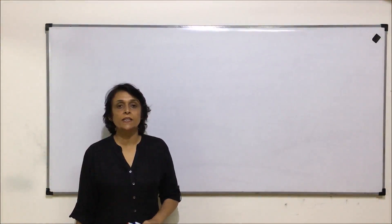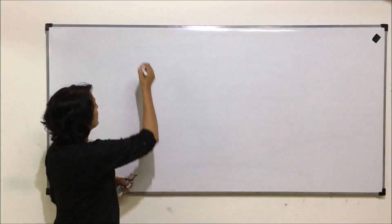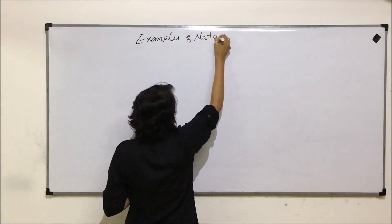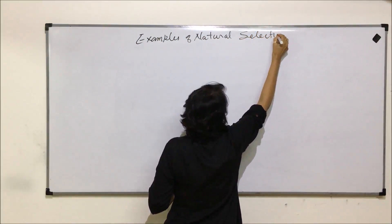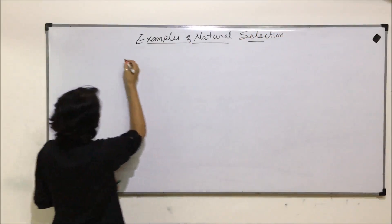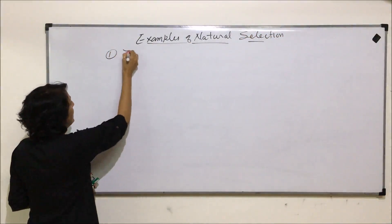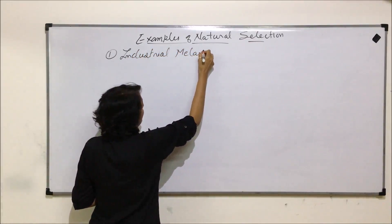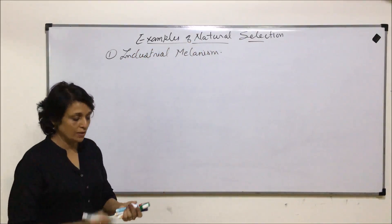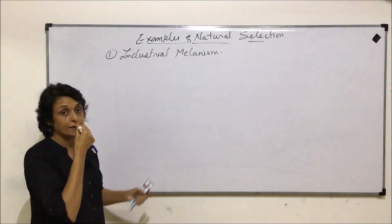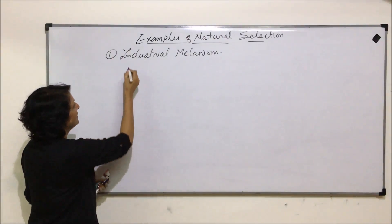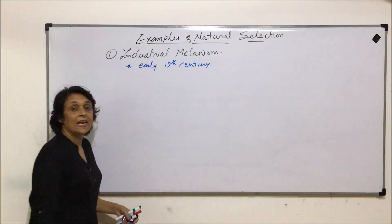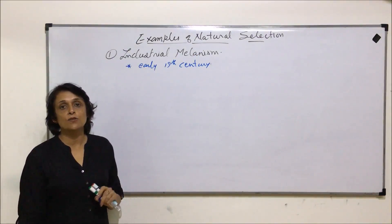From this video, we'll start taking examples in support of natural selection. The first example is called industrial melanism. This is a very interesting example which supports the theory of natural selection. In the early 19th century in England, there was no industrial growth.